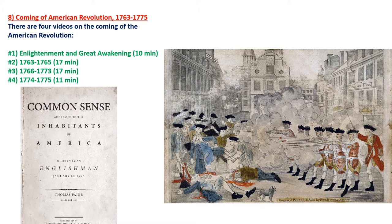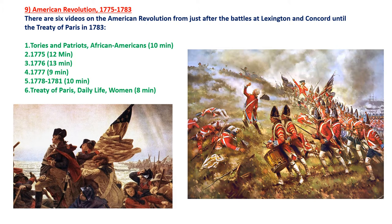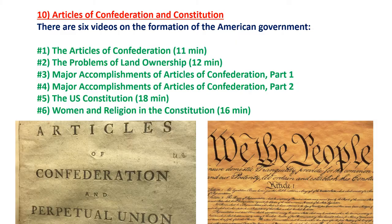There are four videos on the coming of the American Revolution, covering not only the background — like the Enlightenment and Great Awakening — but going through chronologically the events leading up to Lexington and Concord. There are six videos on the American Revolution itself, from just after Lexington and Concord until the Treaty of Paris in 1783, going basically chronologically.